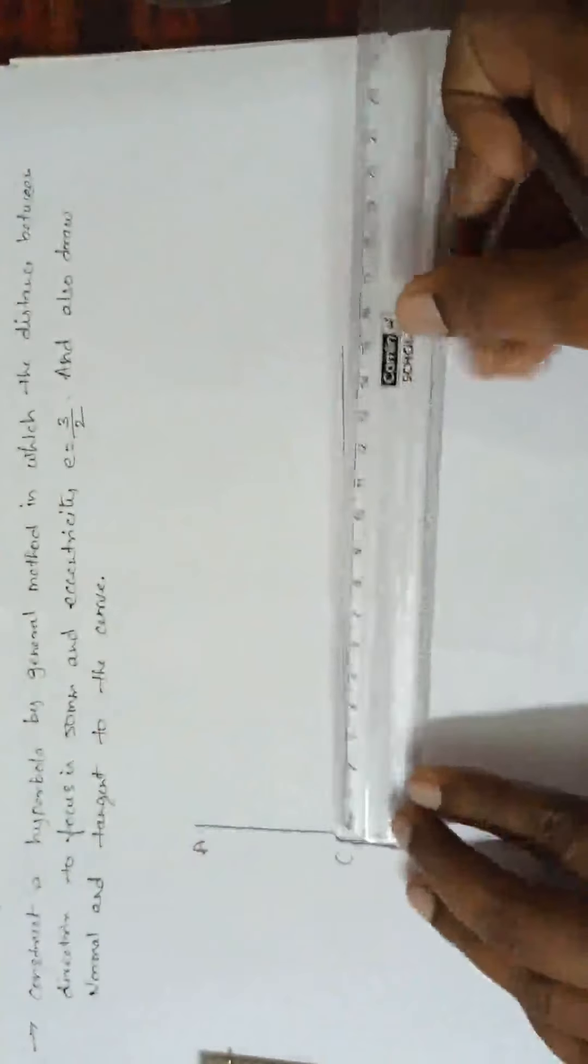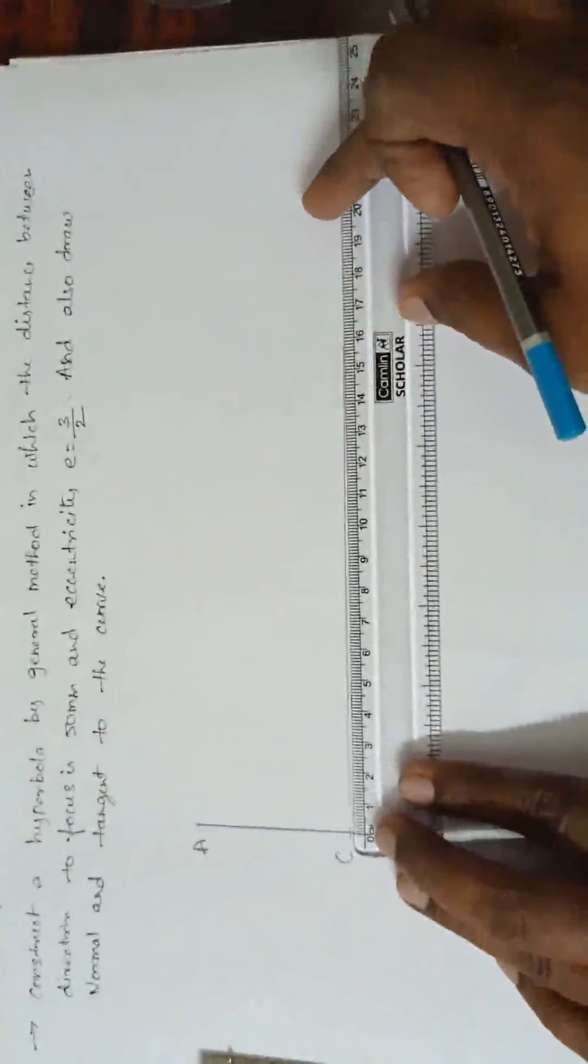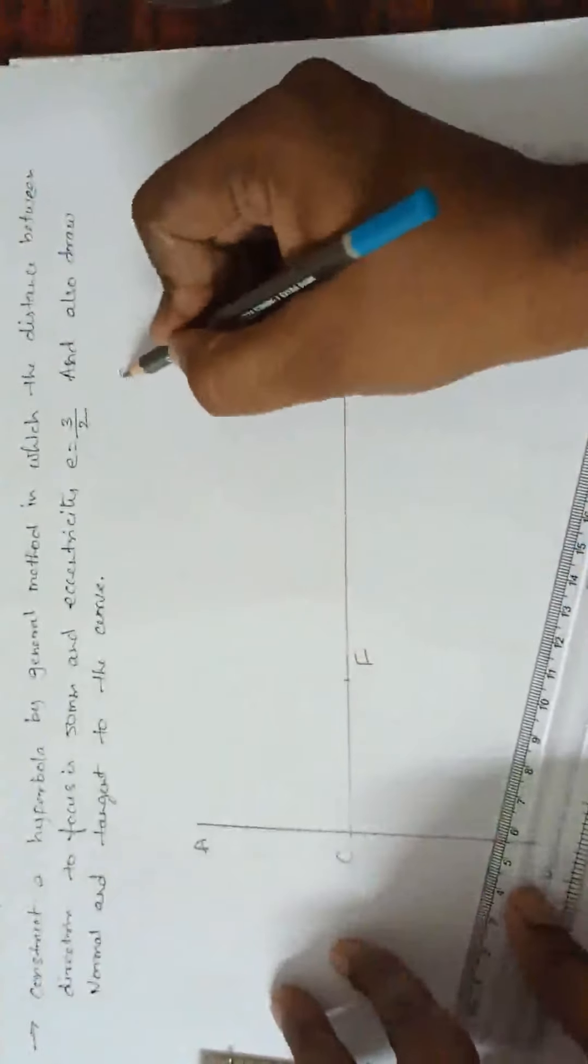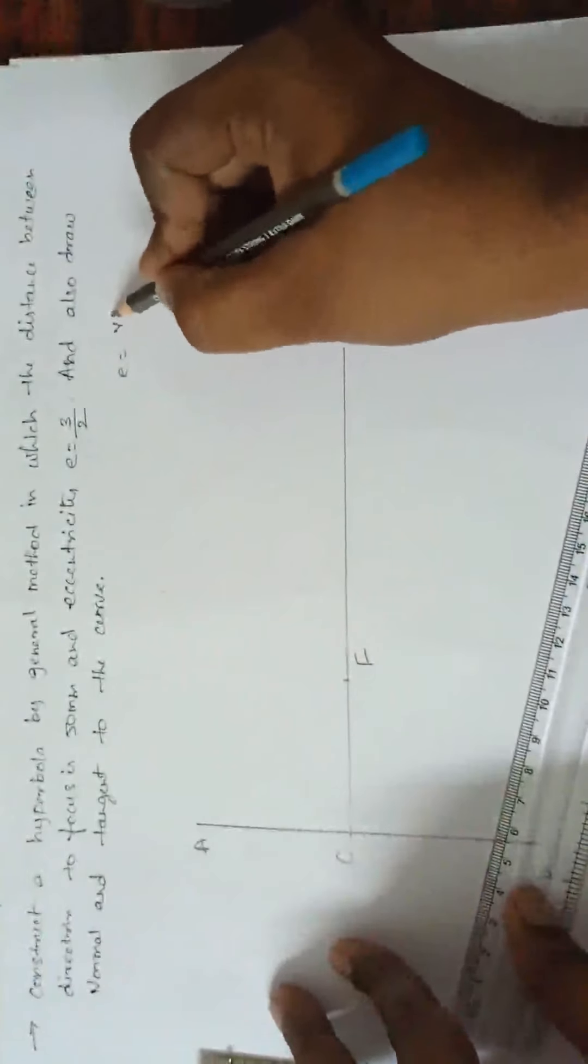See here. Now, what I am doing? Mark a 50 mm. This is. Now, we know that E is equal to VF by VC.